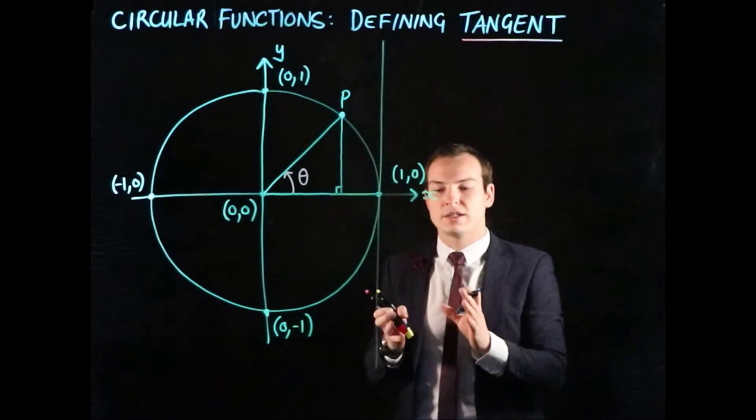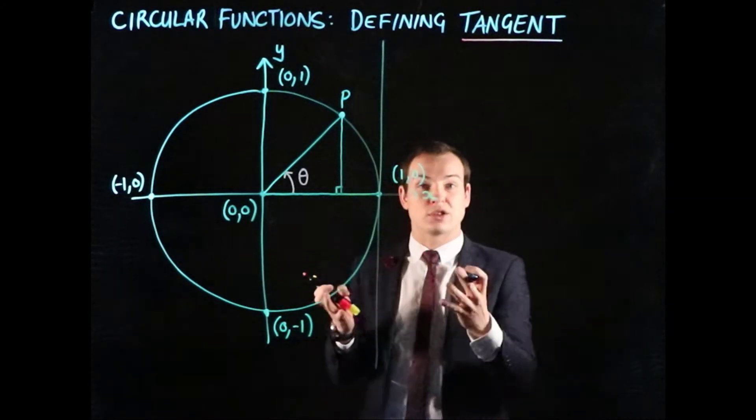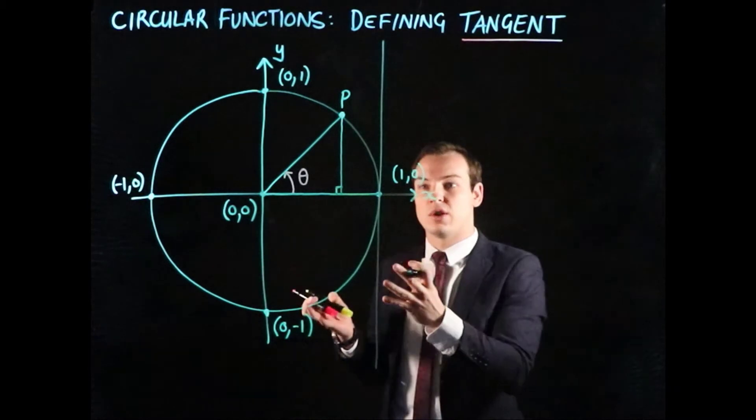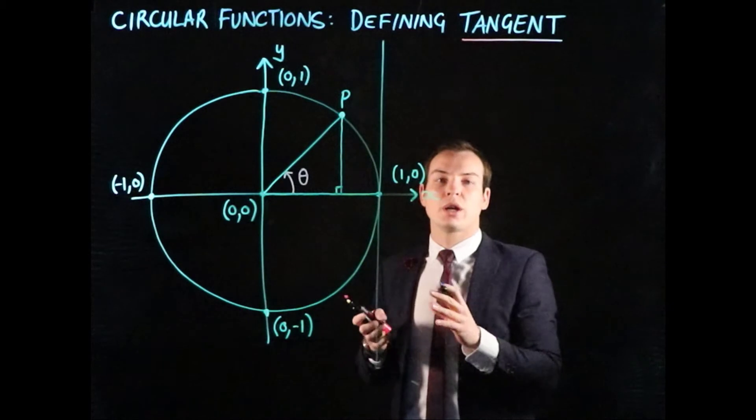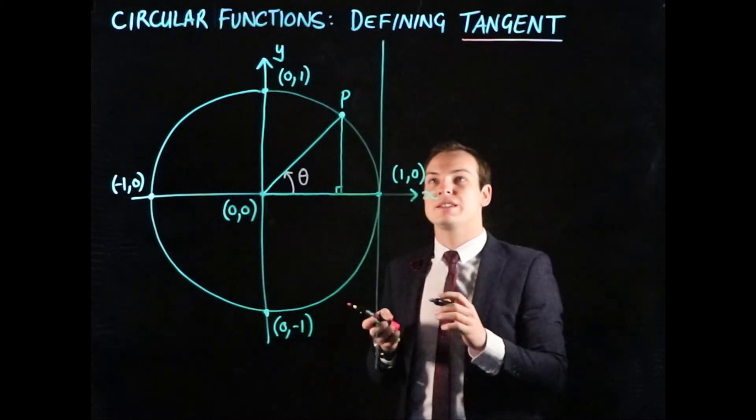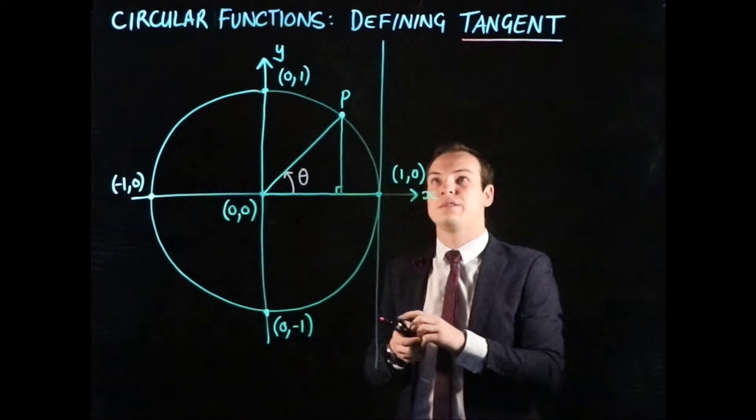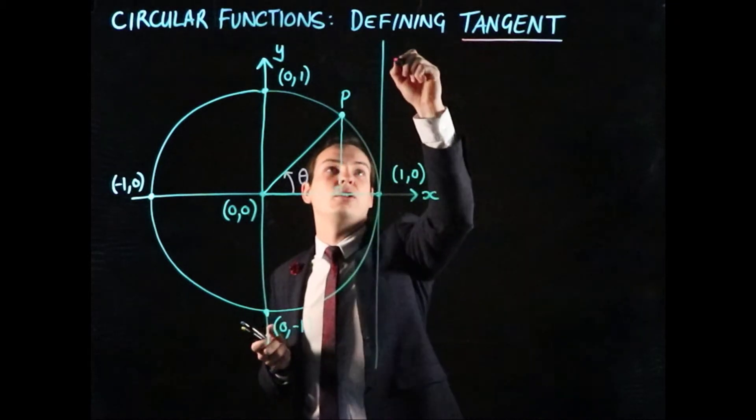A tangent line is a line that touches something just once. In this case, it touches the circle just once at the point (1,0). We're going to use this tangent line to find the value of tangent.